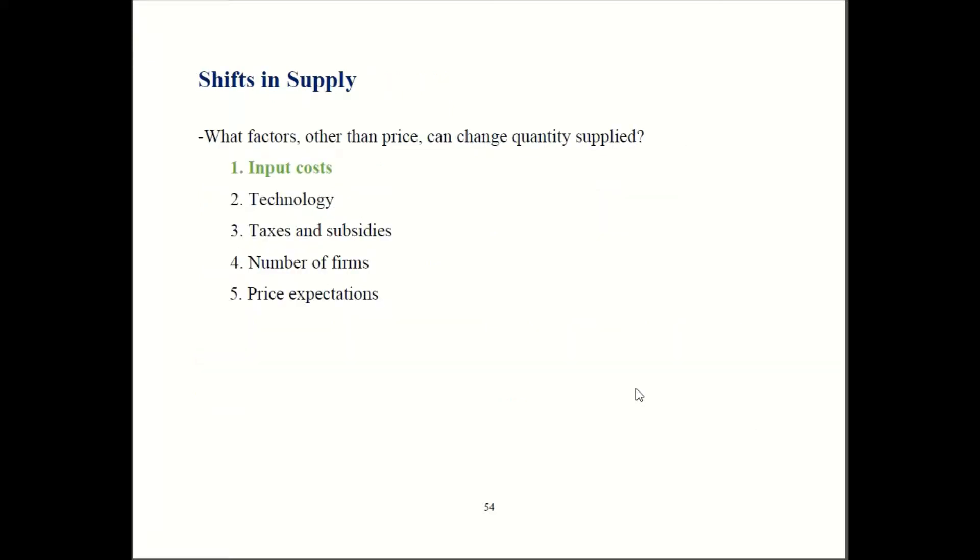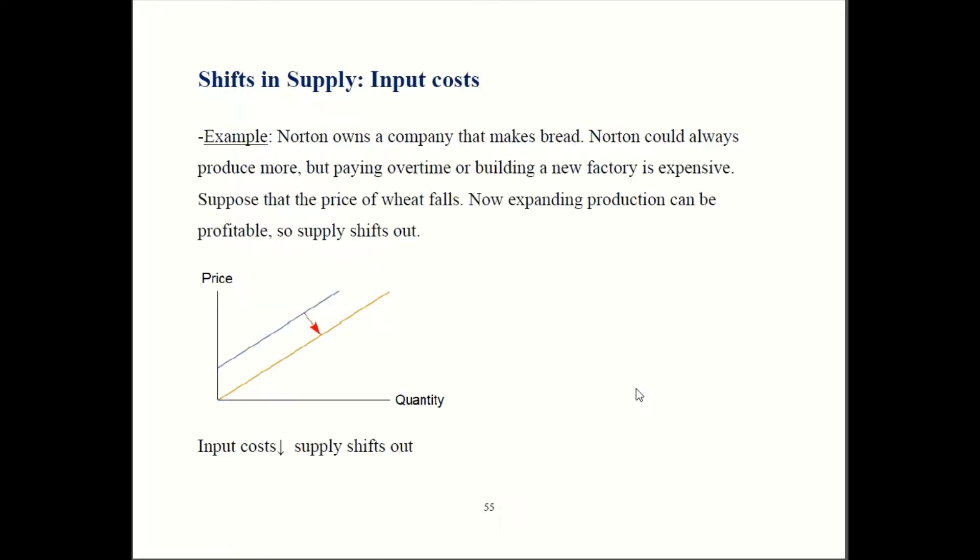So now let's go through our list with the exception of taxes and subsidies and we'll see how it can shift supply. So let's say that Norton has a company and Norton is making bread. Norton could make more bread if he wants, but similar to our earlier story, that means either expanding your factory, which is expensive, or paying workers overtime, also expensive.